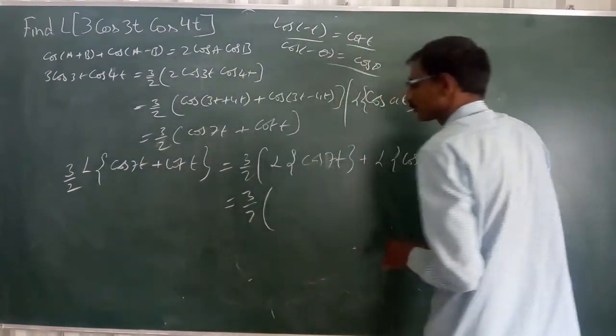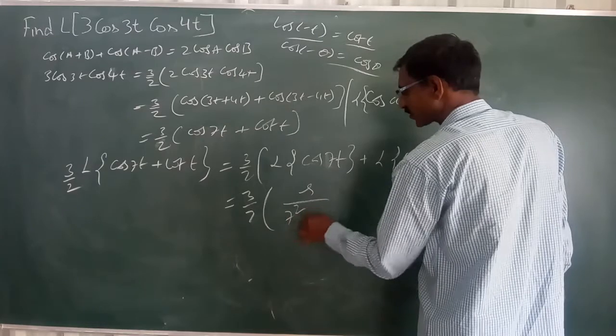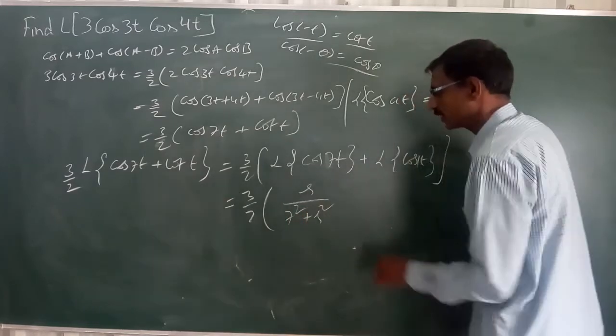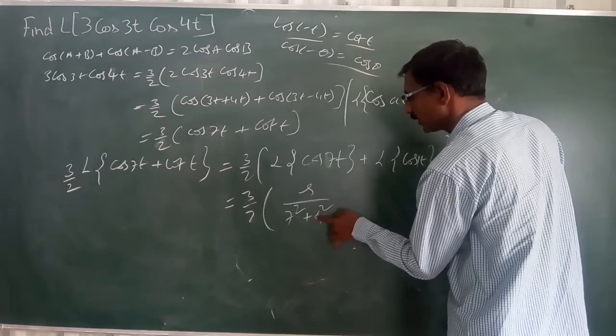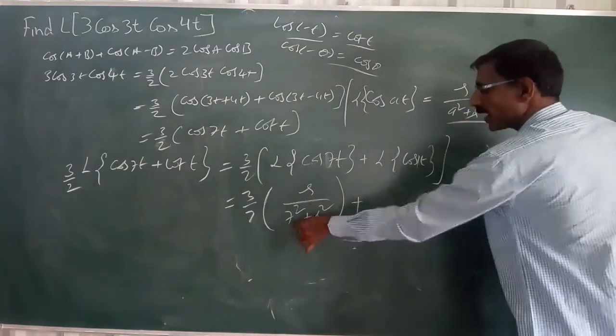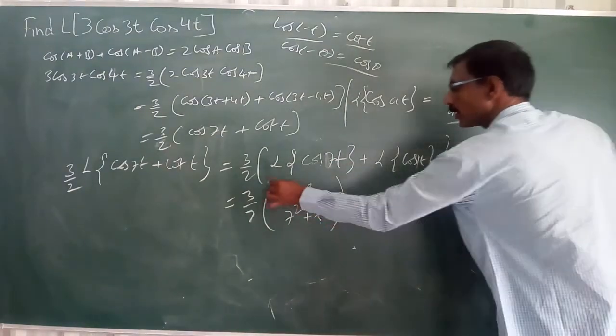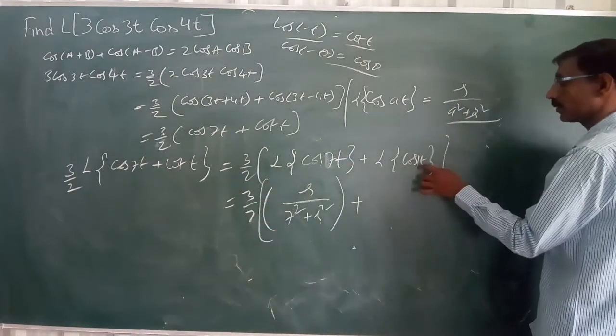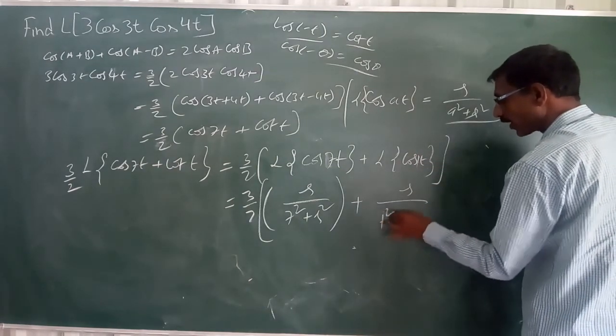3 by 2 into 2. Here sine by 7 squared plus sine squared. 7 squared plus sine squared. 1 squared plus sine squared. Plus A. My A is 7 right? Sine squared. Here I would like to write.